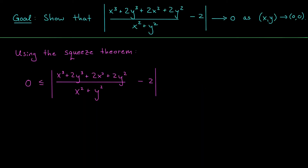Okay, it's proving time. We want to show that our outputs get really close to a value of 2 when our inputs get really close to the origin. That is, we want to prove that the distance — measured using the absolute value — between our outputs and our candidate limit tends to 0 as we move to the origin. Our tool for doing this is the squeeze theorem. We're going to take this quantity, which is non-negative since it's an absolute value, and show that it's less than or equal to some nicer function b(x,y) that also goes to 0 as (x,y) approaches the origin.